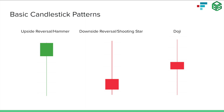Now we can talk about candlestick patterns. Before we start, it should be explained that individual one or two candlestick patterns don't have a ton of weight. What really matters is the trend of the overall market and the trend of the stock. What a candlestick pattern can do is signal when a stock is getting ready to make a big move up, or when the stock is tired and needs to rest. Individual patterns are hints at what might be happening, but they're never guaranteed.